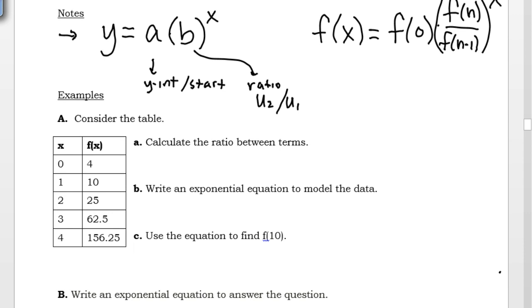So my first example is going to ask me to find the ratio. In my y equals equation, that's my b value. To get my b value, I need to take my second value divided by my first value. So I can pick any two consecutive values. I can do 10 over 4. I could also do 25 over 10. I could even do 62.5 over 25. It just has to be two terms that are right next to each other, two consecutive terms. And whichever pair I pick, I get the same answer. So my ratio is 2.5.